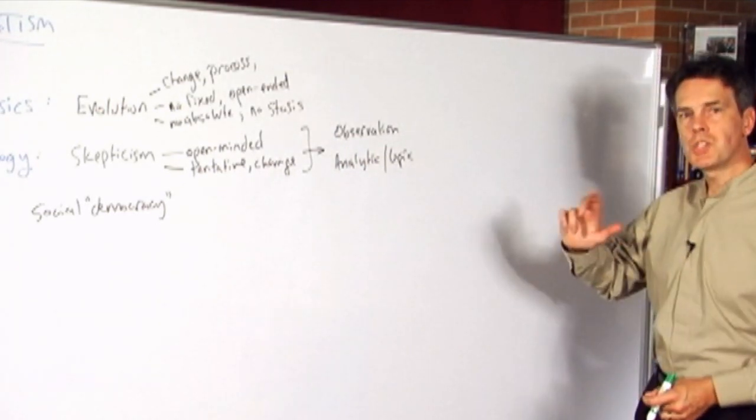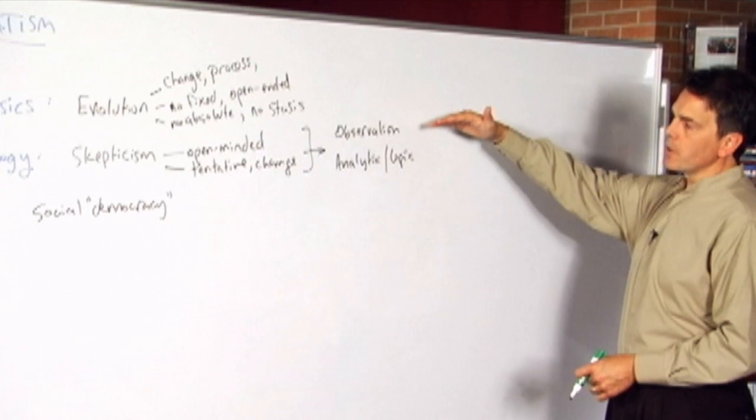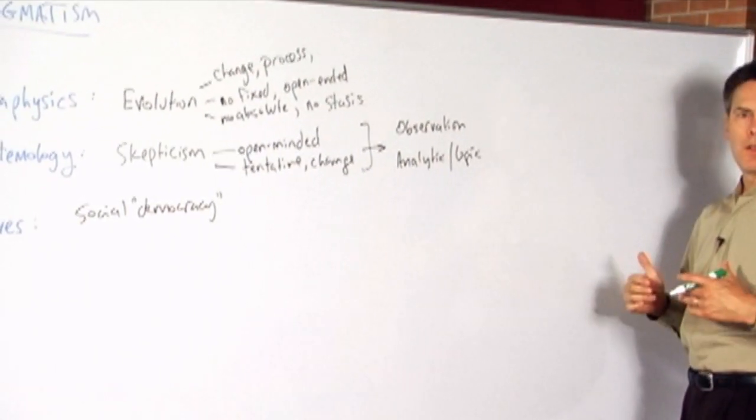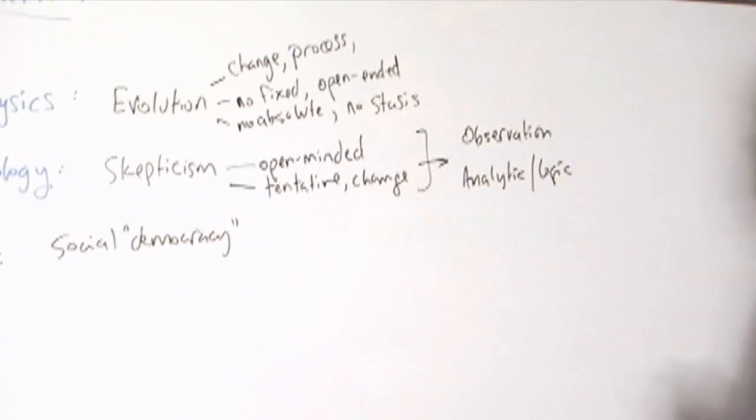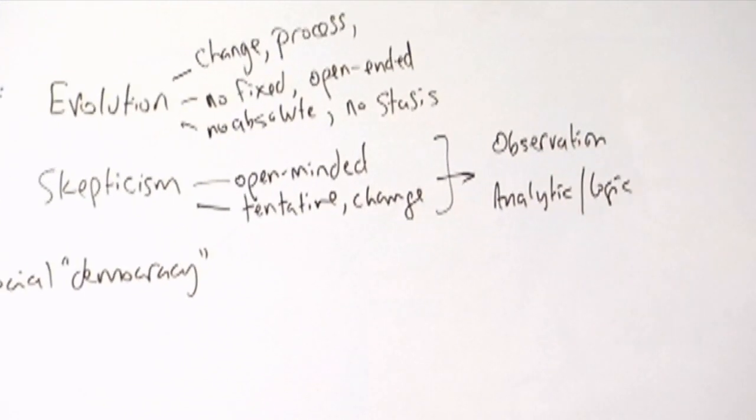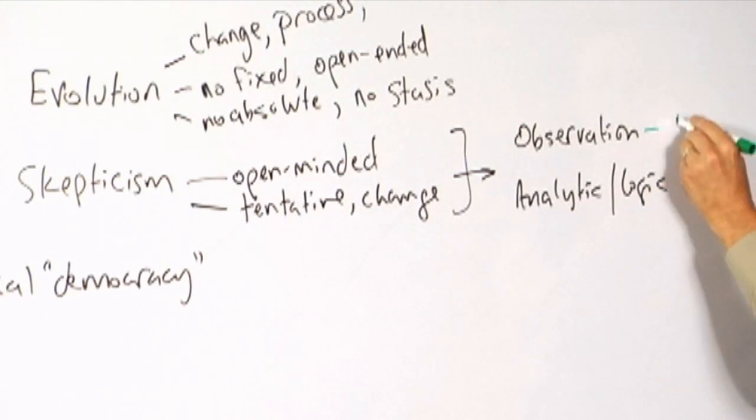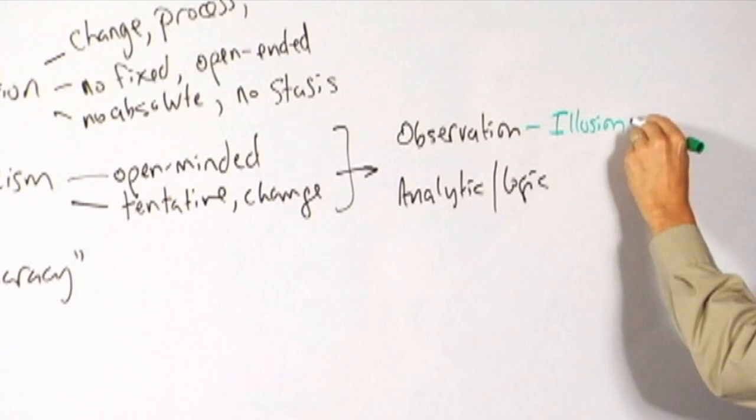What the pragmatists will do is take more seriously skeptical criticisms about logic and skeptical criticisms of observation than the realists will do. They'll point out, for example, as many philosophers had done before, that observation, for example, is a process that is sometimes subject to various sorts of illusions.